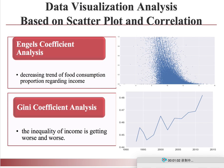Third, we visualized the Gini coefficient, which calculates the proportion of income going to the poorest, middle income, and richest people, measuring how evenly the income is distributed.